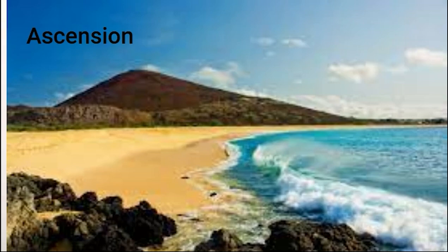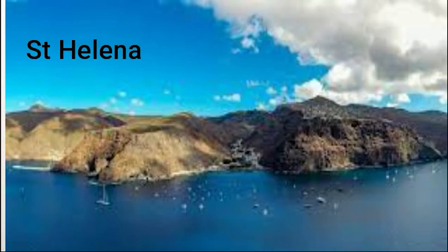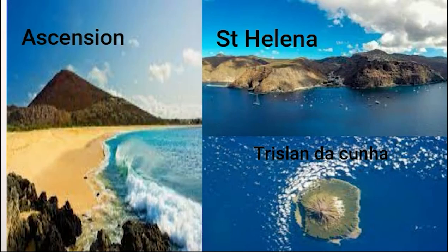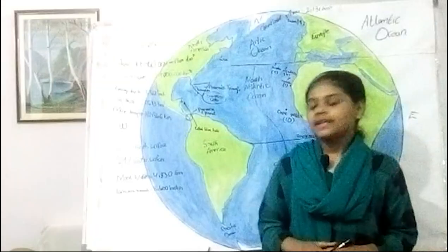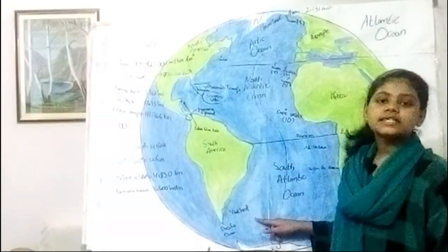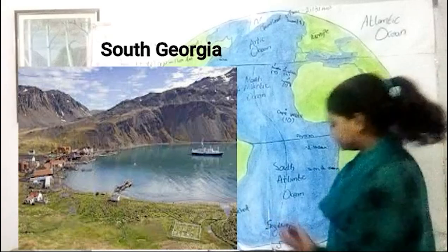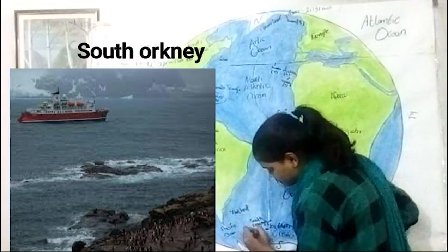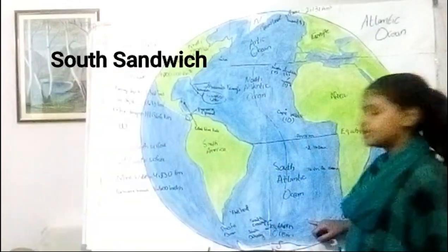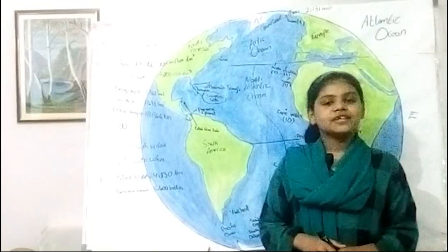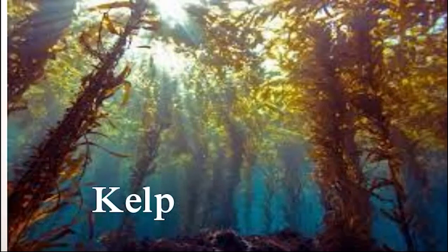Ascension Island is in the South Atlantic Ocean and is part of the British Overseas Territory. All three islands share the same constitution and the same governor. The Falkland Islands, South Georgia, South Orkney, and South Sandwich are also island groups of the Atlantic Ocean.